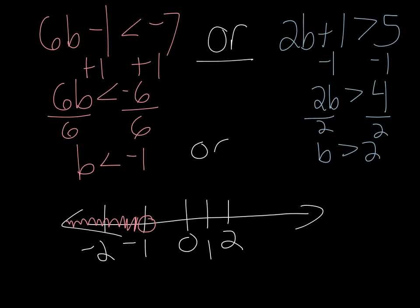B is greater than 2. Open circle again. Greater means like 3, 4, 5, etc. So that will go off to the right.